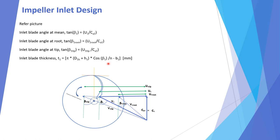The inlet blade thickness T1 is calculated using the formula: T1 = π(D1h + H1) × cos(β1) / N − B1. I will make a separate video explaining how this is derived, but for now this formula is used to calculate the inlet blade thickness of the impeller.